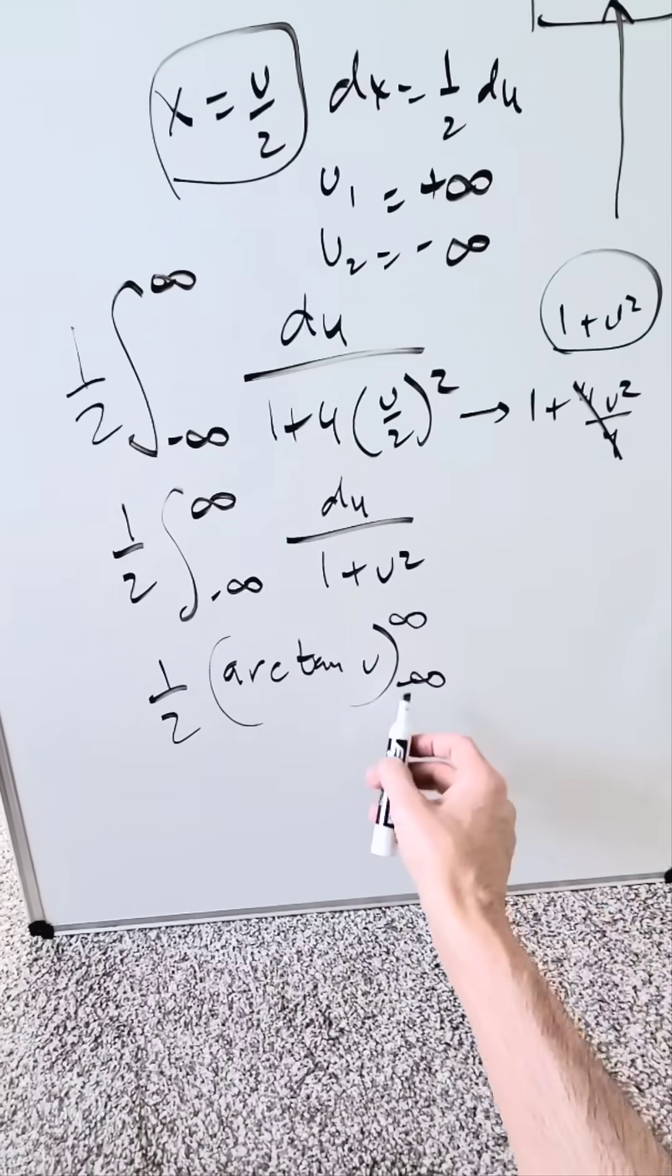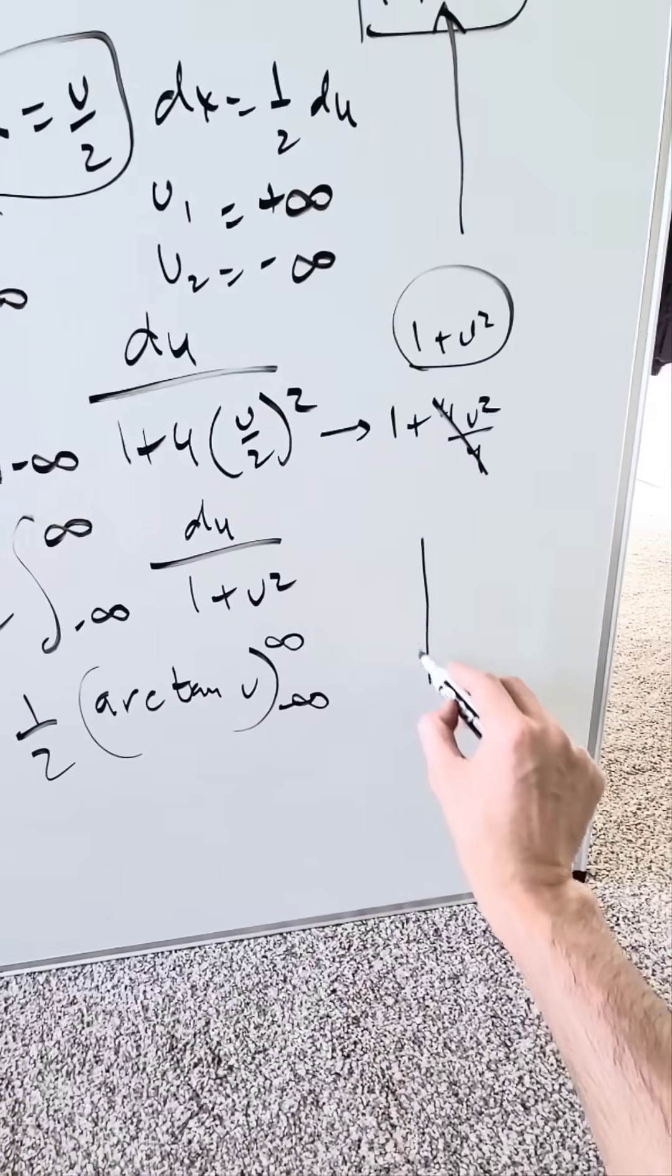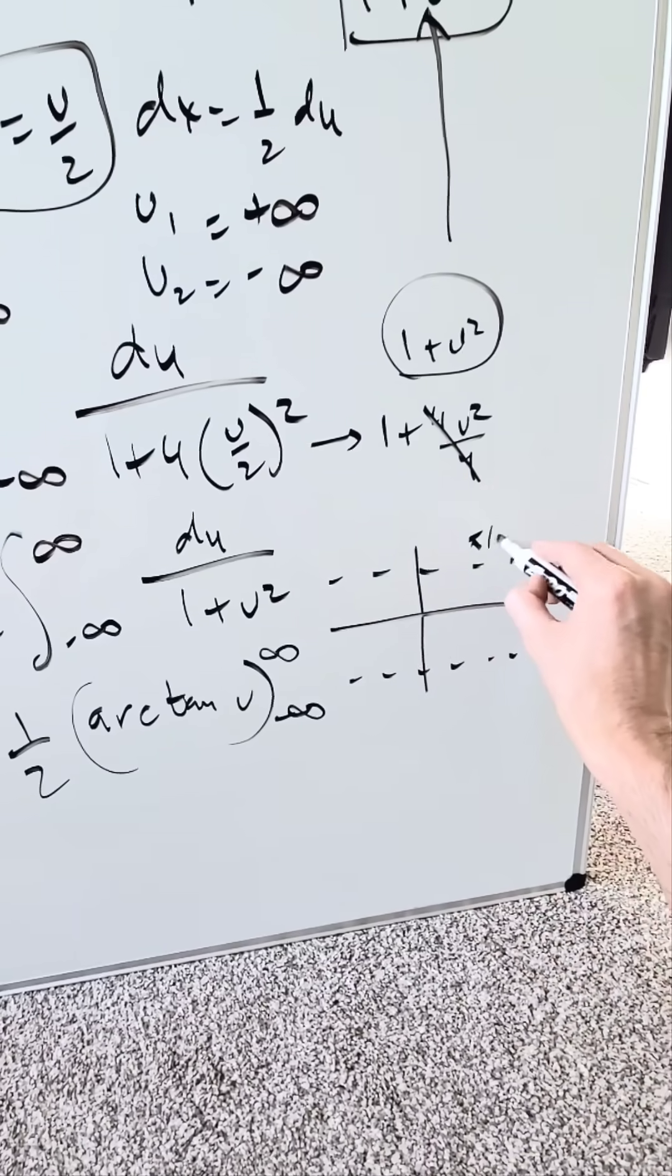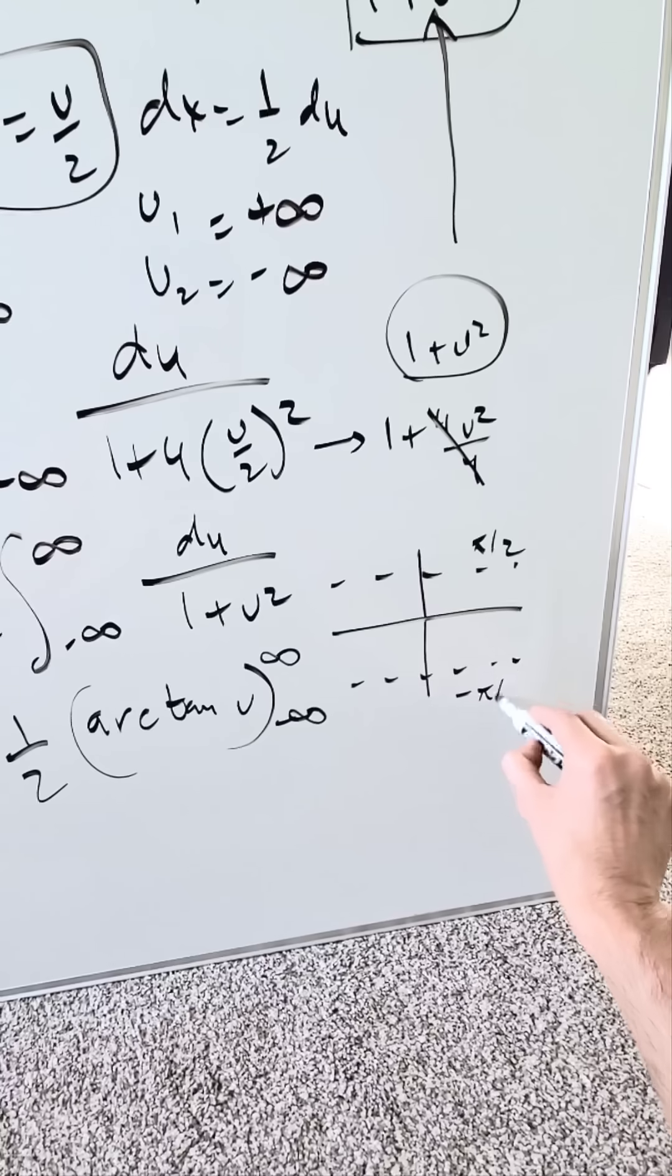You're doing arctan of infinity minus arctan of minus infinity. Think of the graph of the arctan. You are squeezed here between two horizontal asymptotes: y equals positive pi over 2 and y equals minus pi over 2.